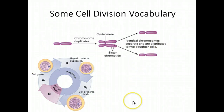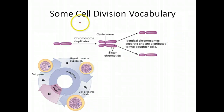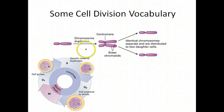The vocabulary for cell division and the cell cycle is complicated because it seems like almost every word you need to know begins with a C. It gets a little confusing, but with a little practice you'll be able to understand it fully.